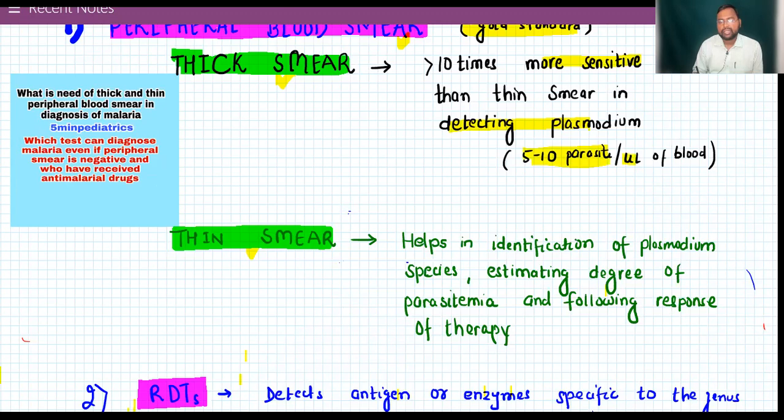Next, we have thin smear. It helps in identification of species - which species is causing the malaria, whether vivax, falciparum, or malariae. It also helps in knowing whether the drug is acting or not, so you can see the response of therapy by looking into thin smear.